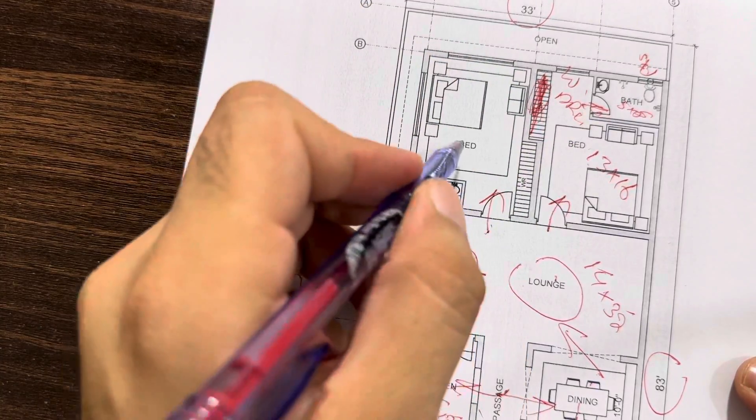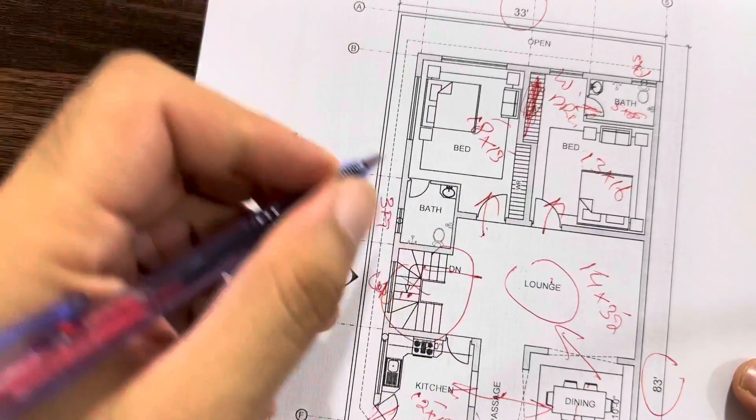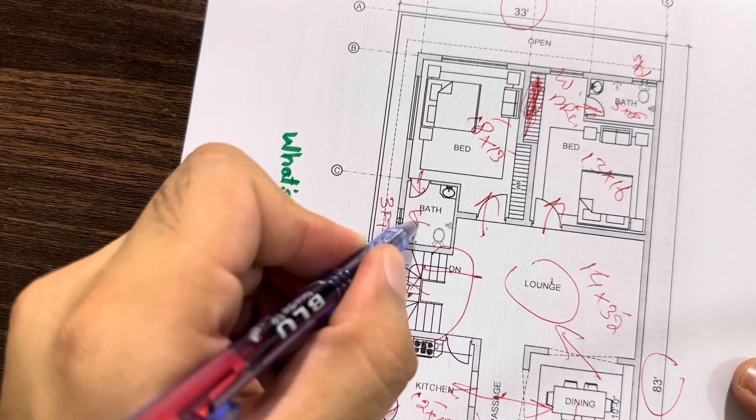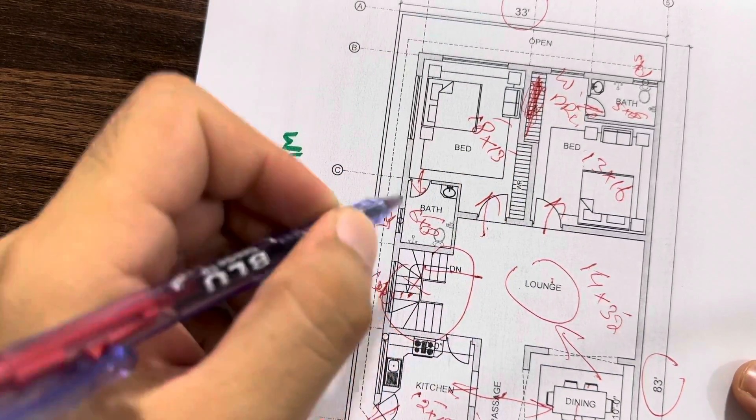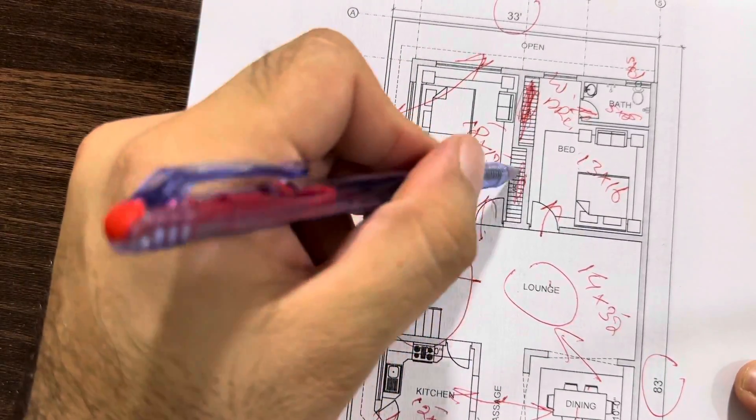This is the second bedroom. Size is 18 feet by 13 feet. This is bath. Size is 6 feet by 8 feet. This is its ventilation. You can find the cross ventilation here. And this is wardrobe.